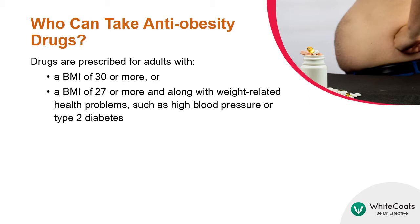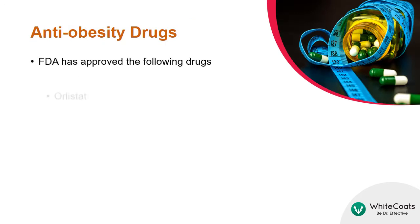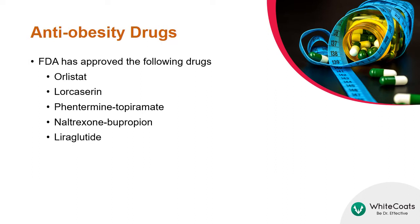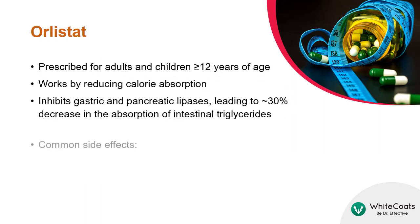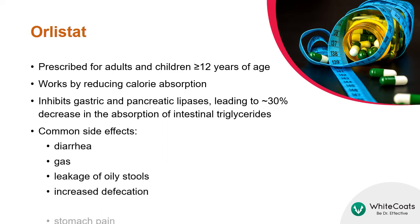Such weight-related health problems include high blood pressure or type 2 diabetes. The Food and Drug Administration has approved Orlistat, Lorcaserin, Phentermine-Topiramate, Naltrexone-Bupropion, and Liraglutide for the treatment of obesity. Orlistat is prescribed for adults and children ages 12 and older.